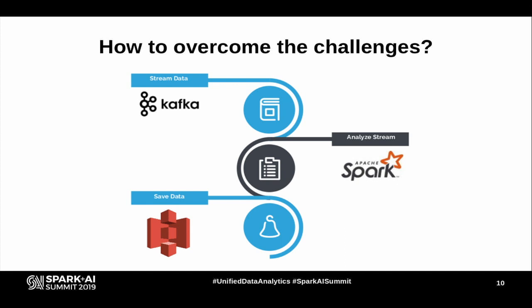All these challenges were overcome by the platform we built. The three core components are: first, Kafka — a very popular streaming framework used for keeping the queue and sending messages using the pub-sub model. Second, Apache Spark, which we use for analyzing the data and provides a lot of features. And third, for storage, we use Amazon S3. These three things are the core components of our platform, though there are other components as well.